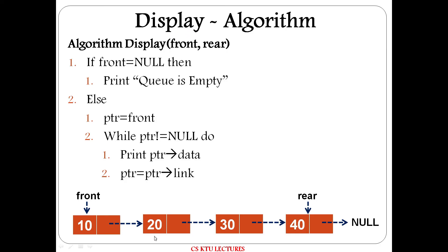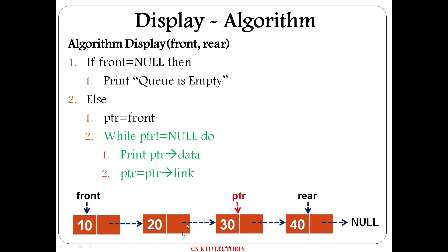Finally, the display algorithm. The argument is front. If front equals null, the Queue is empty. Otherwise, set ptr equal to front. While ptr is not equal to null, display ptr data and update ptr to ptr arrow link. For example: display 10, ptr updates; display 20, ptr updates; display 30, ptr updates; display 40, ptr updates; then ptr equals null so the while loop exits. This completes the display algorithm.